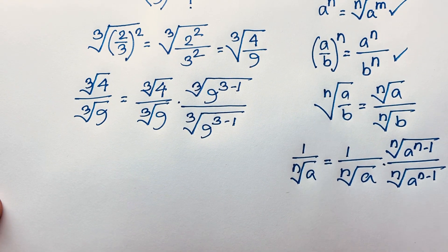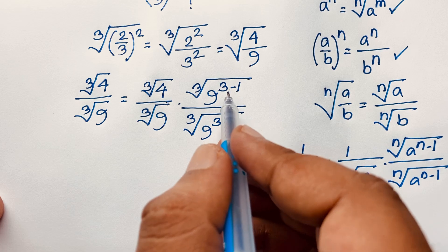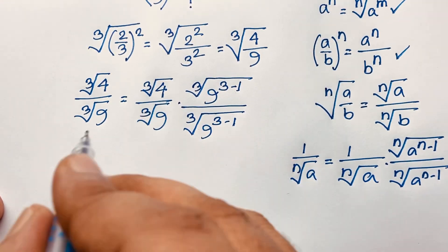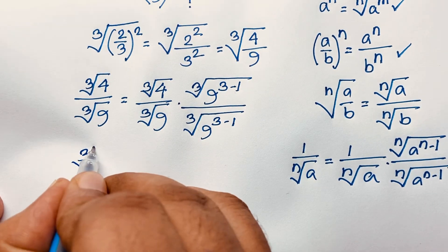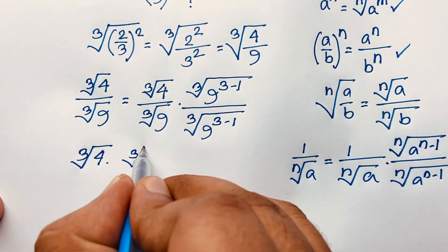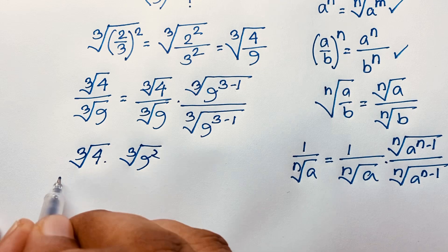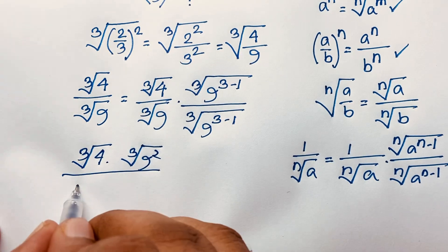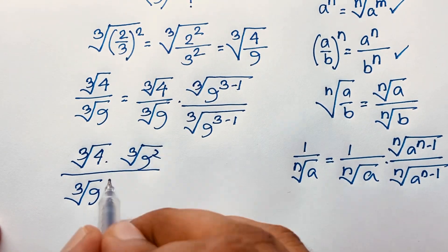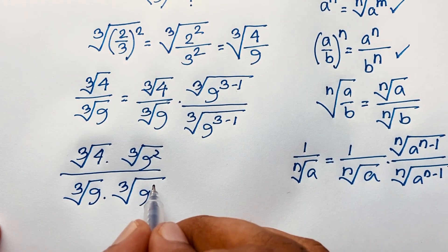Now, cube root of 9 to the power 3 minus 1 is 9 to the power 2. So this expression becomes cube root of 4 times cube root of 9 to the power 2, over cube root of 9 times cube root of 9 to the power 2.